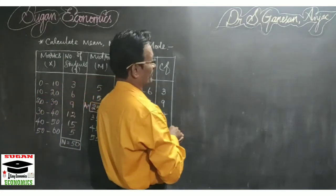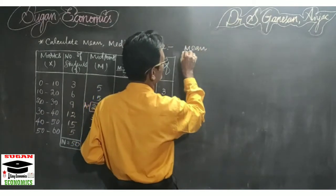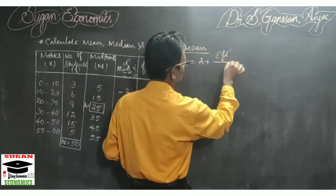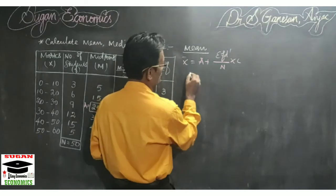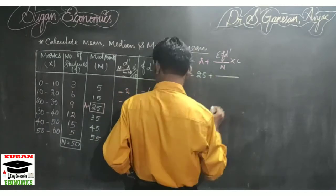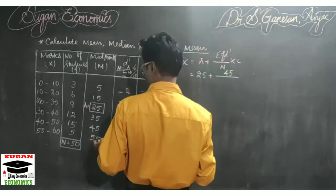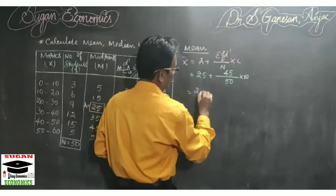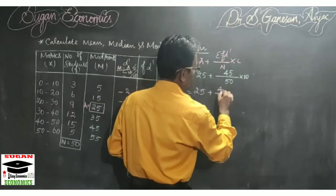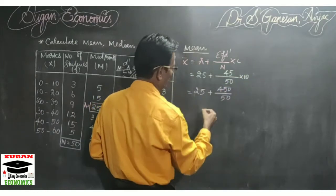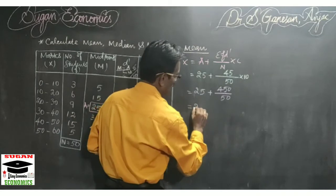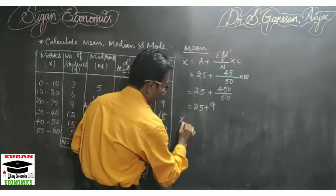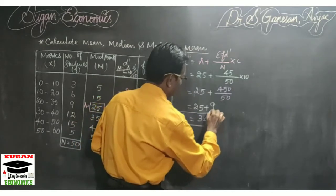For arithmetic mean, the formula is: x̄ = a + (σfd' / n) × c. Substituting the values: a is 25, σfd' is 45, n is 50, and class interval c is 10. That gives 25 plus (45/50) × 10 = 25 plus 9 = 34. So x̄ is equal to 34.